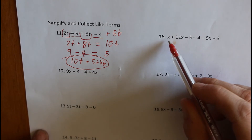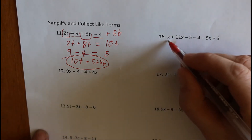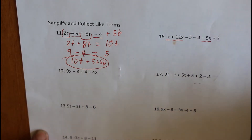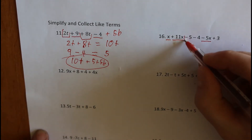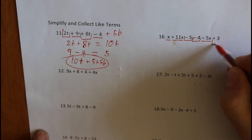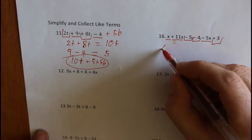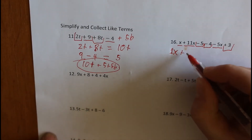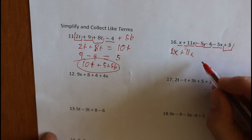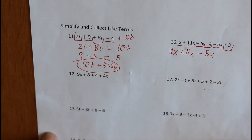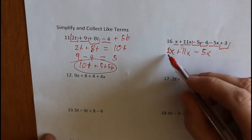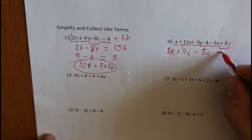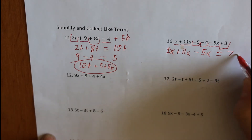All right, I'm going to do one more and then I think we're good. So I'm going to find all the x's. X by itself just means 1x, plus 11x, take away 5x. So 1 plus 11 is 12x, take away 5x is 7x.